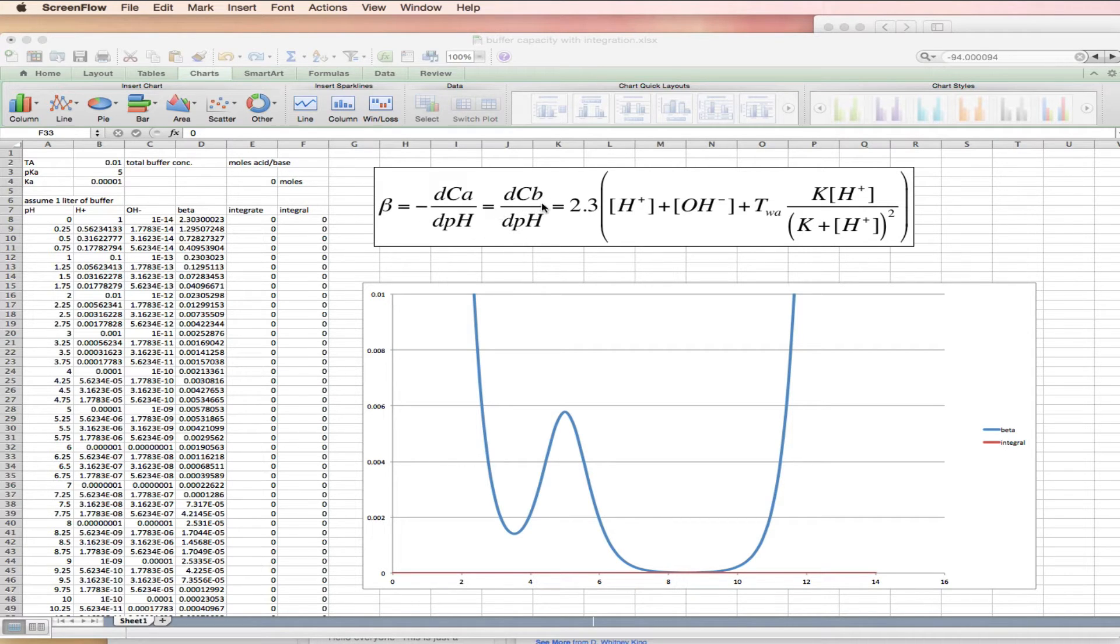Or DCB, concentration of strong base, DPH. And this expression is equal to 2.3 times the proton concentration.